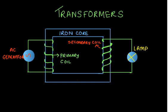On the other side of the soft iron core is another coil — the secondary coil — which is connected to an output, which is a lamp in this case. The output can be anything; the lamp is just for the sake of representation. One thing to note is that the primary coil is always connected to an AC source, and the output is always connected to the secondary coil.